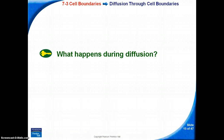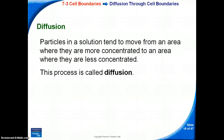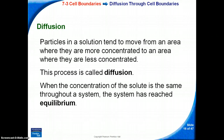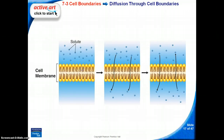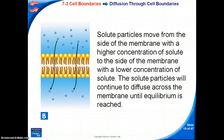Key Concept 3: What happens during diffusion? Particles in a solution tend to move from an area where they are more concentrated to an area where they are less concentrated. This process is called diffusion. There is a higher concentration of solute on one side of the membrane compared to the other side. Solute particles move from the side with higher concentration to the side with lower concentration. The solute particles will continue to diffuse across the membrane until equilibrium is reached.